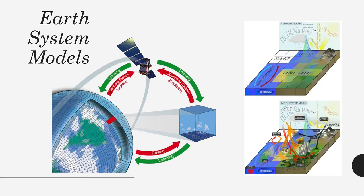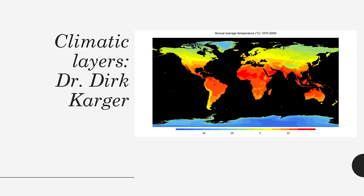The models that people are using now for predicting the climate in the future and in the past are extremely complex. They are three-dimensional models about atmospheric circulation and oceanic circulation, and they include vegetation models and soil models — everything together — trying to understand how climate works in the present in order to predict it into the past or the future. From all these things we get our climatic simulations.